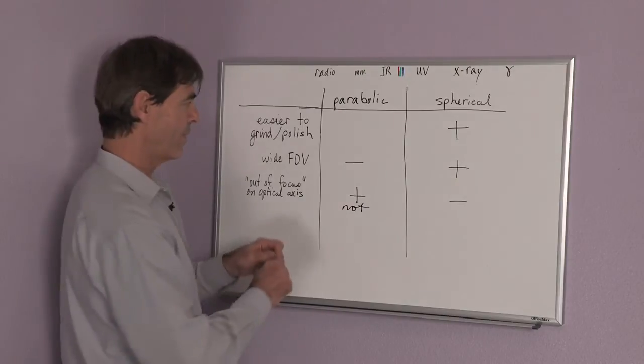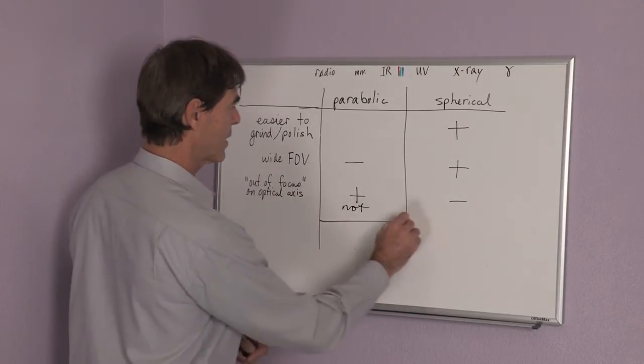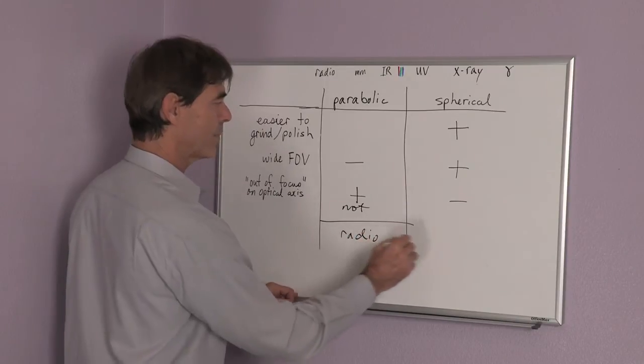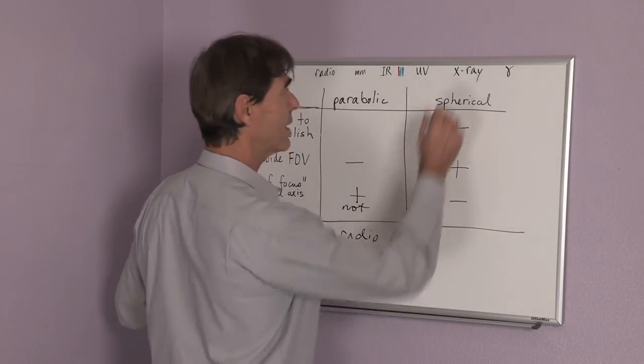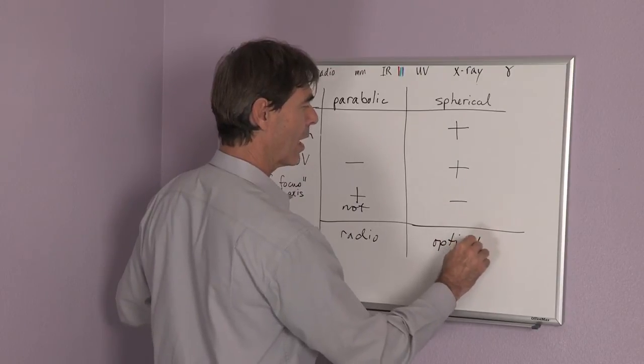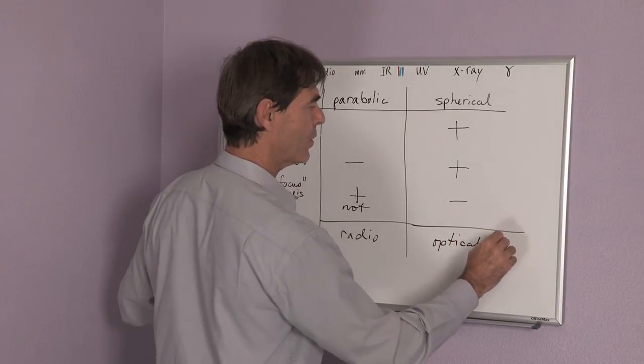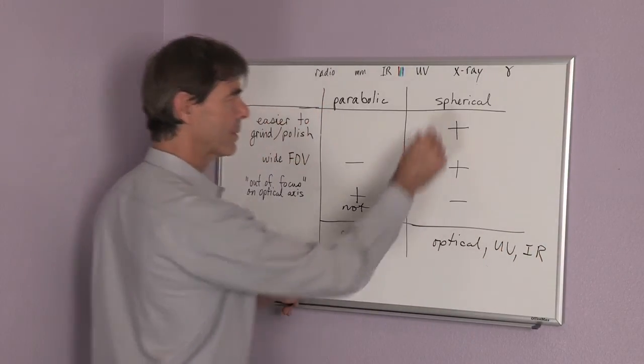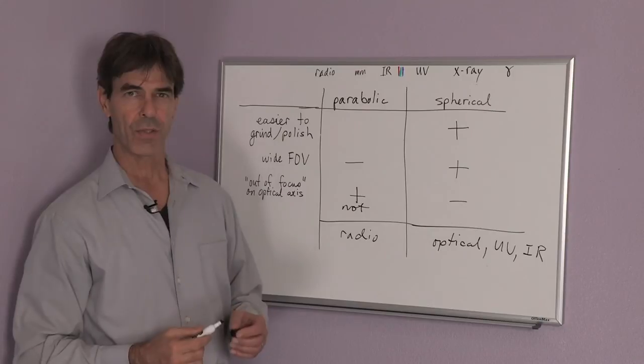So the summary of this is parabolic mirrors are good for radio, and spherical mirrors are good for optical, UV, and infrared telescopes if you want to have a wide field of view.